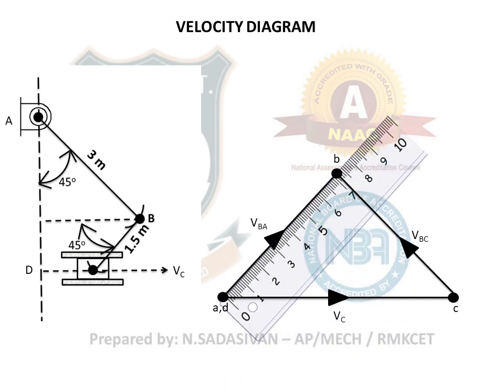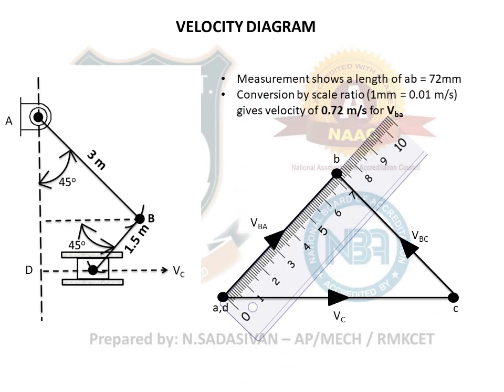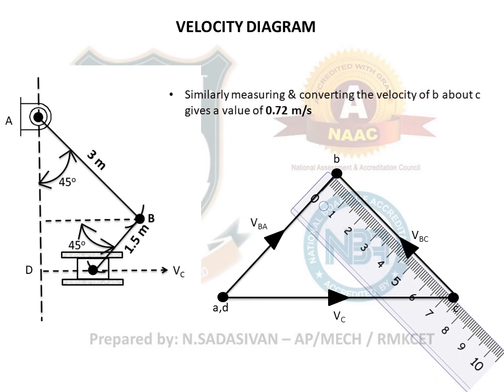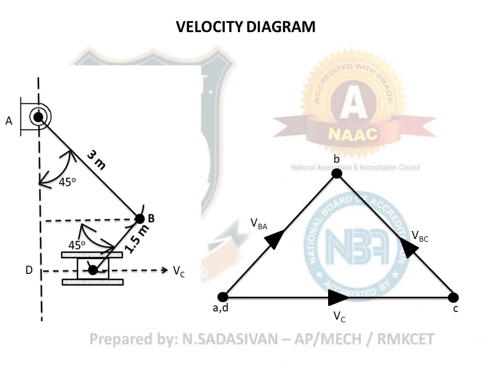Mark the directions and name the vectors. By measuring the length, it comes to around 72 mm. Using the scale of 0.01 m/s per mm, 72 mm times 0.01 gives 0.72 m/s for link AB. Similarly for link BC, the measurement is again around 72 mm, giving 0.72 m/s. Since both links are at 45 degrees, you get the same values. So the velocity of both links AB and BC is 0.72 meter per second.